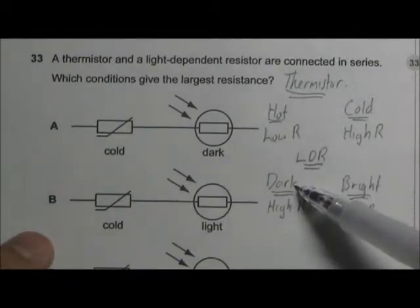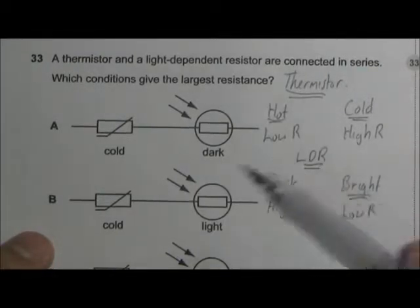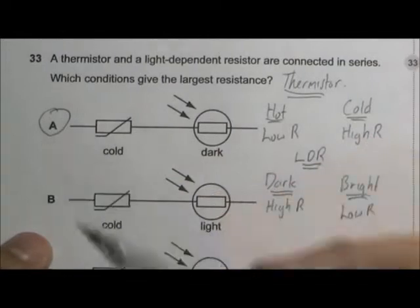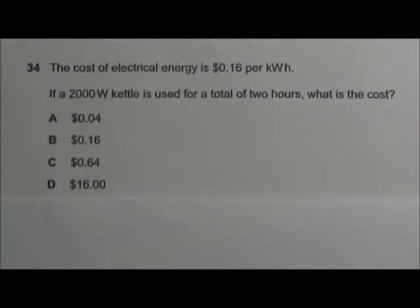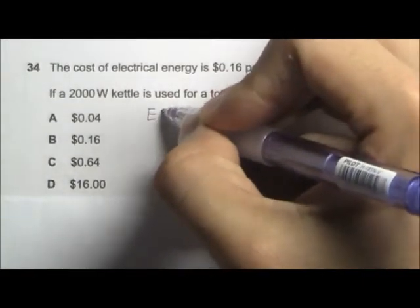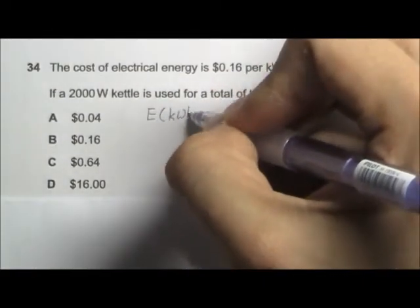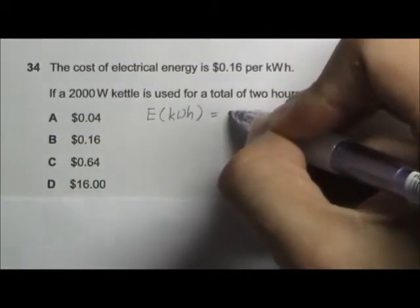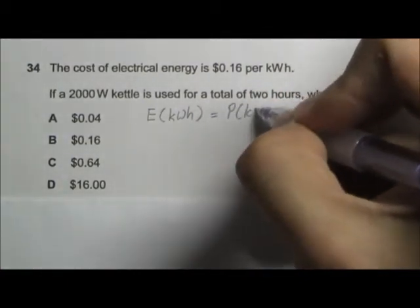To find out the cost of electricity, we need to find the electrical energy used in kilowatt-hours. To do that, we have to take the power in kilowatts.